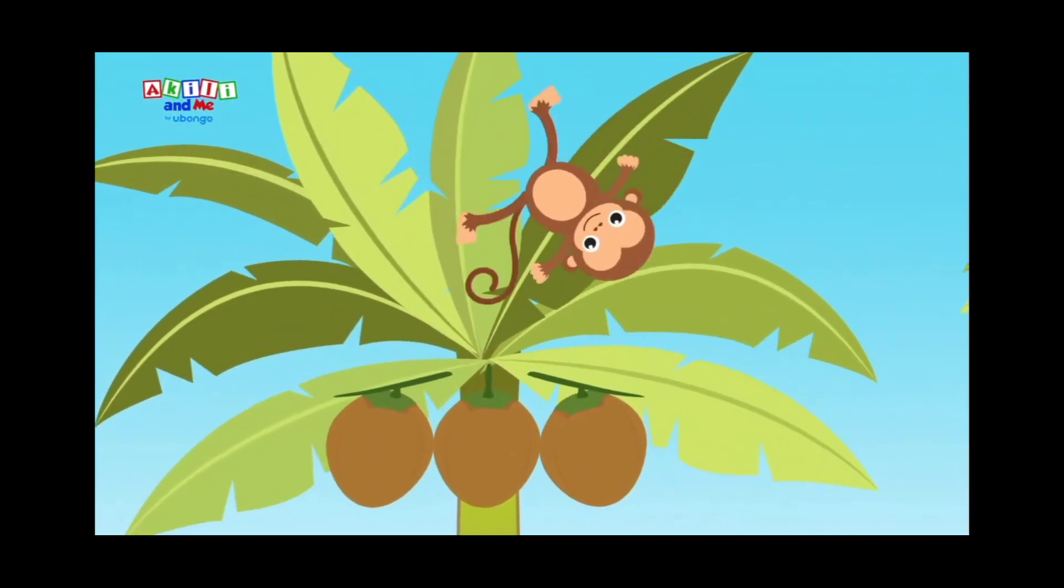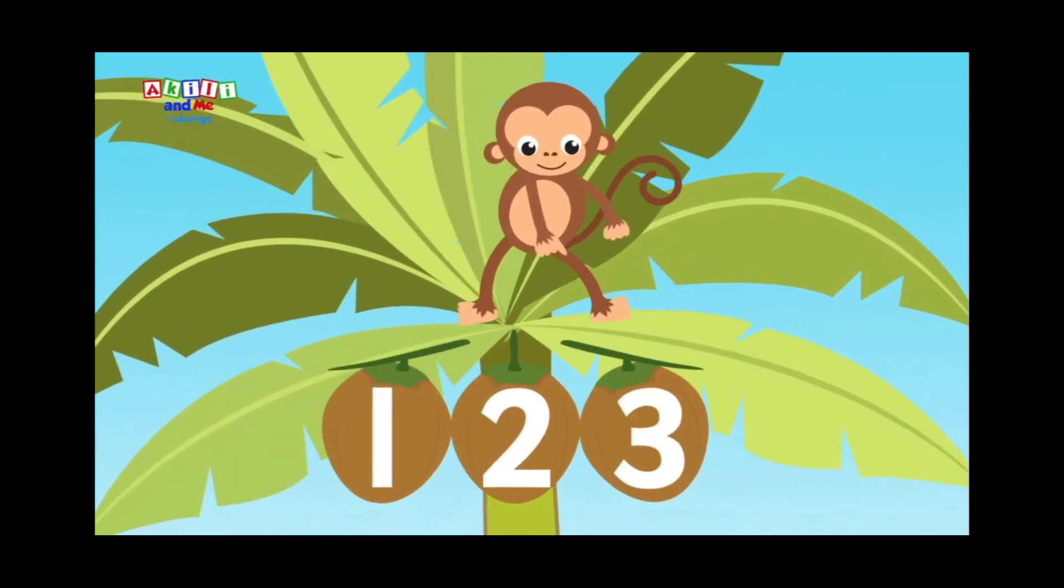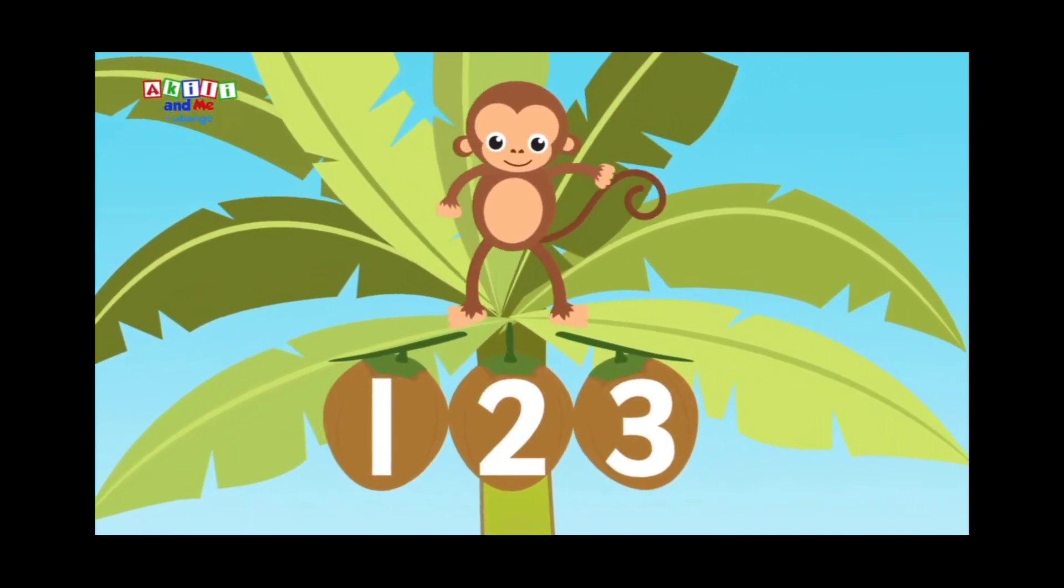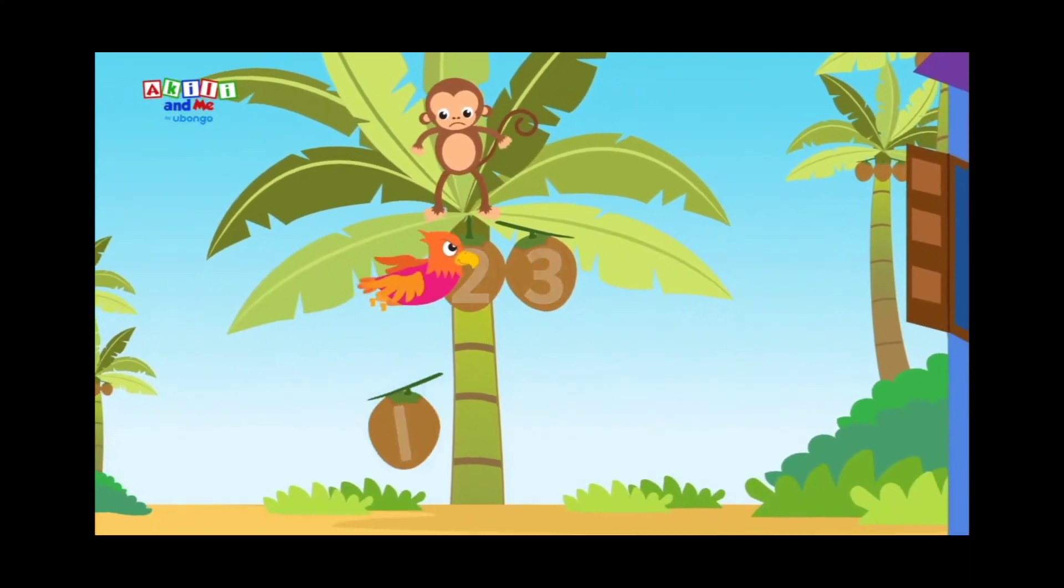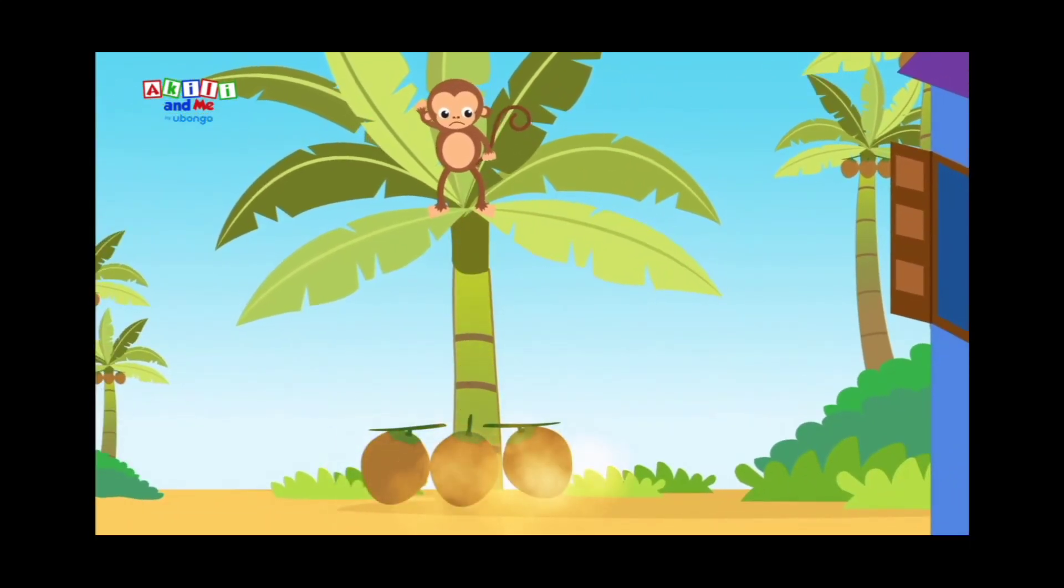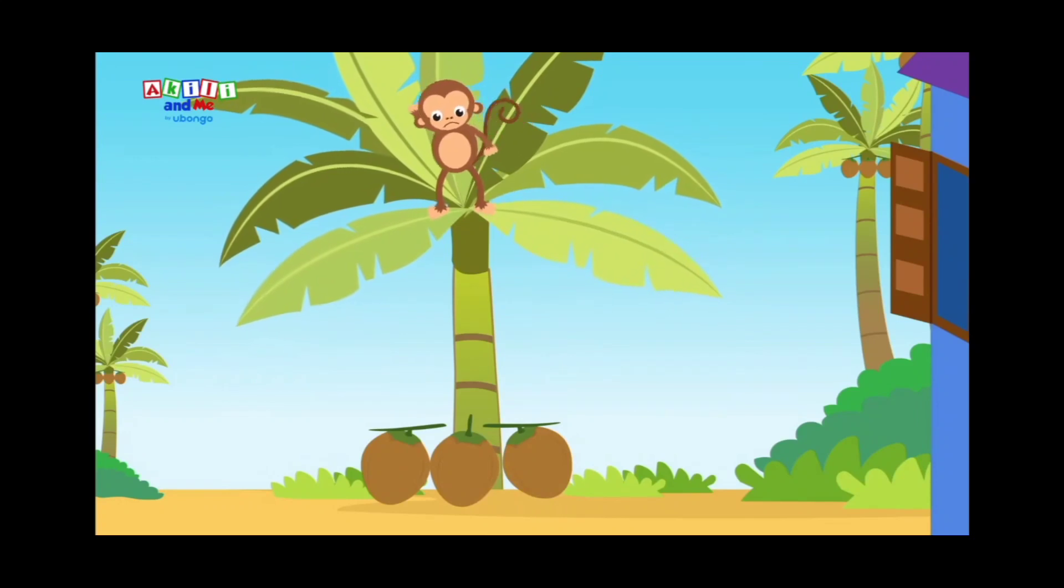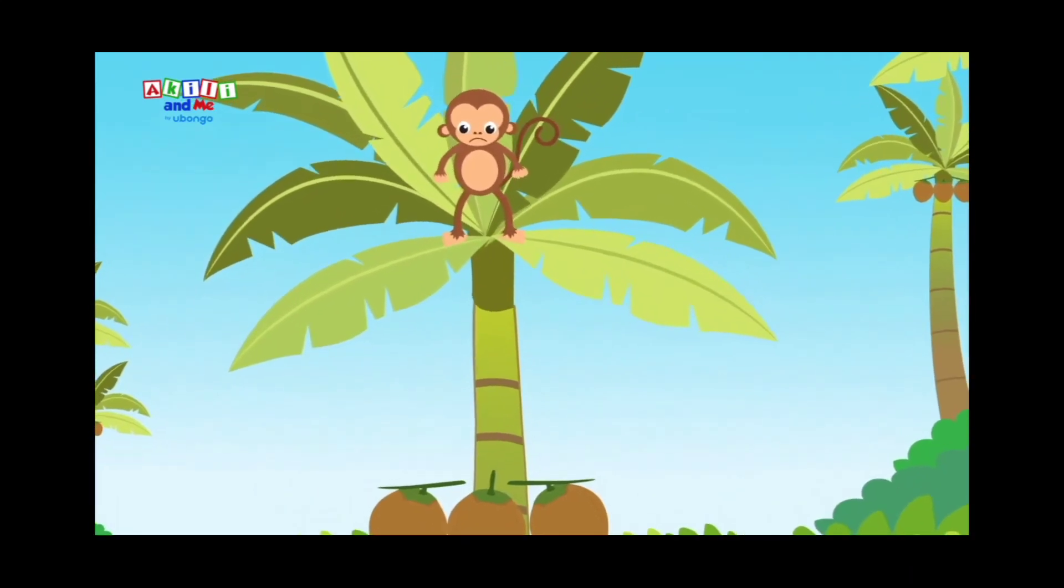I've got a whole big bunch of coconuts. One, two and three. I've got a whole big bunch of coconuts up here in my tree. My coconuts fell down. How many coconuts are there now?